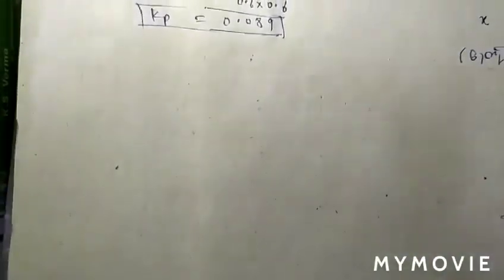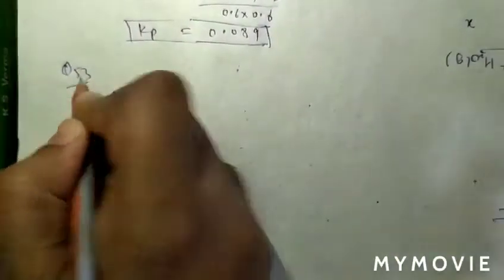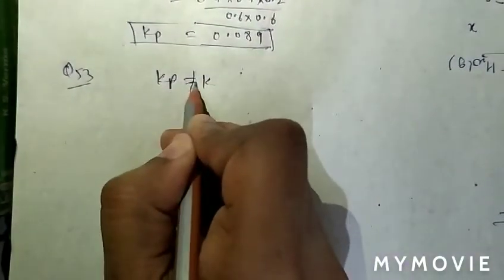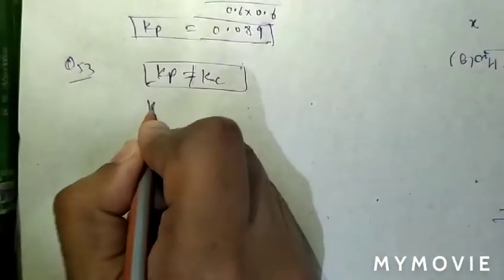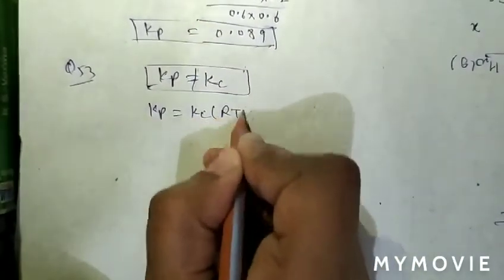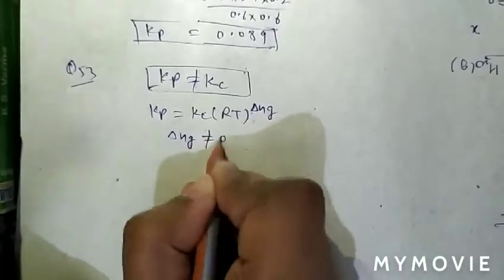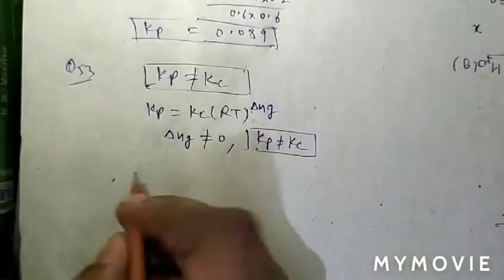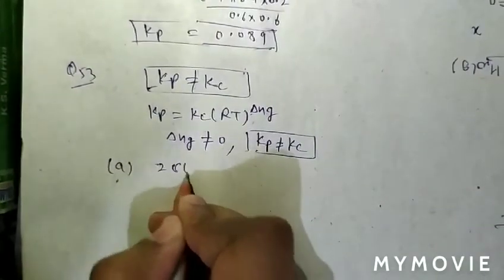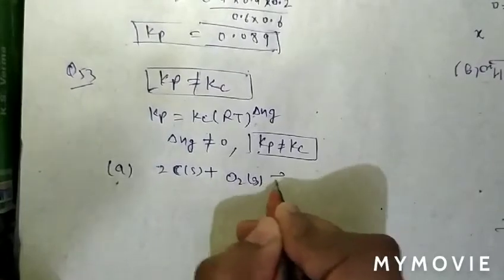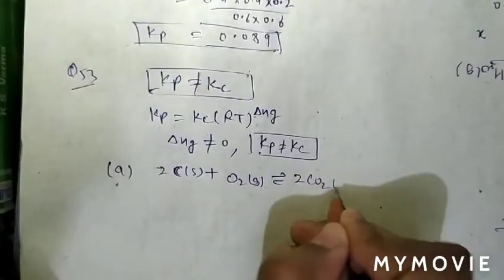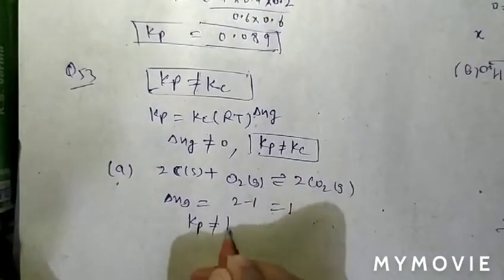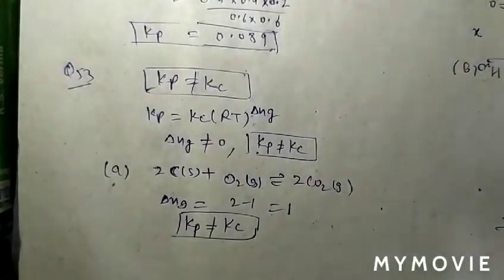Question 53: for which reaction is Kp not equal to Kc? Since Kp = Kc × (RT)^Δng, Kp ≠ Kc when Δng ≠ 0. In option A: 2C(s) + O₂(g) → 2CO₂(g). Δng = 2 − 1 = 1 (only gaseous moles counted), so Kp ≠ Kc. Question 53, option A is correct.